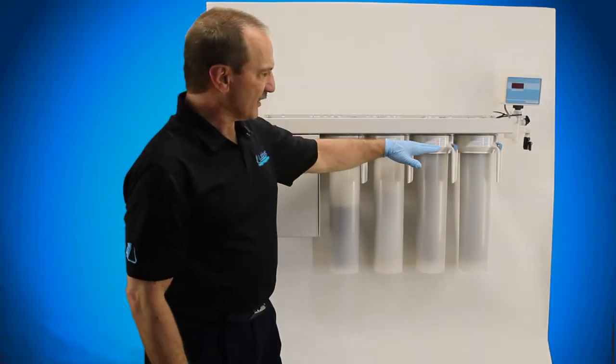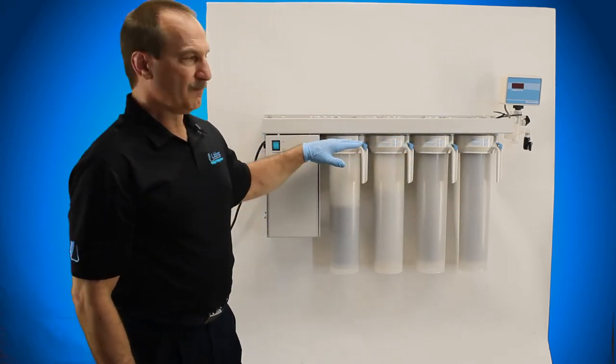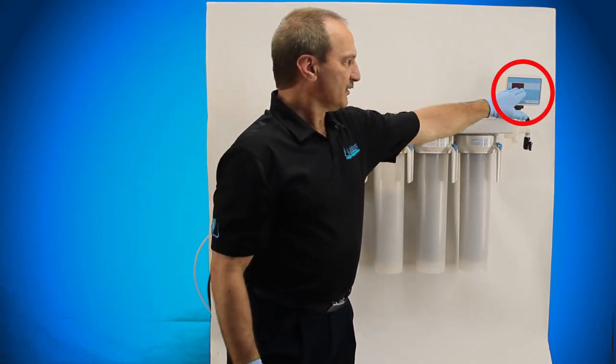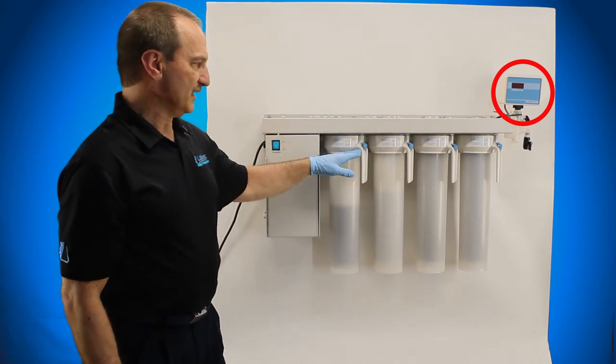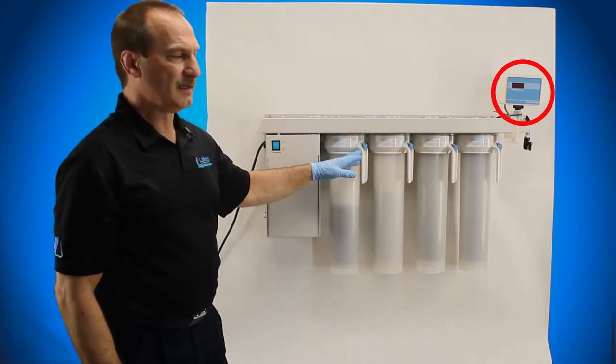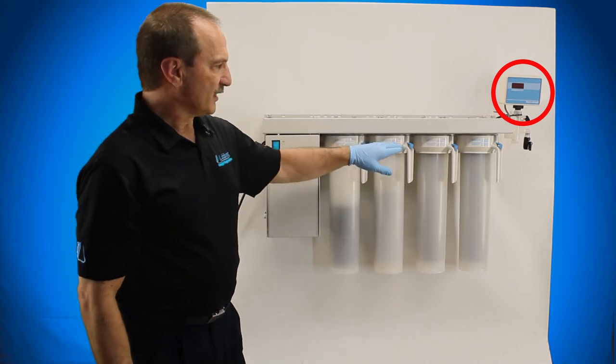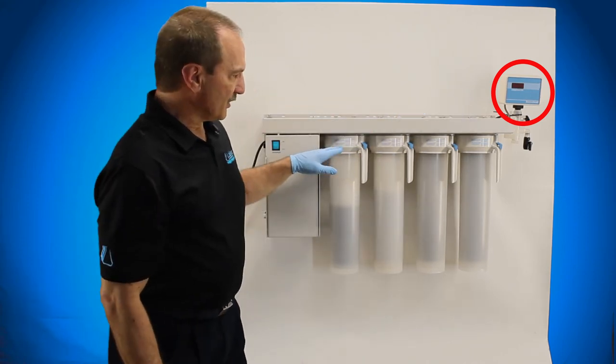If you don't put these in correctly and they don't seat, your purity reading up here is going to be zero, and you're going to want anywhere between fifteen, sixteen, seventeen, up to eighteen. But if you don't put them in correctly, you're going to end up with zero, and they're going to bypass every cartridge.